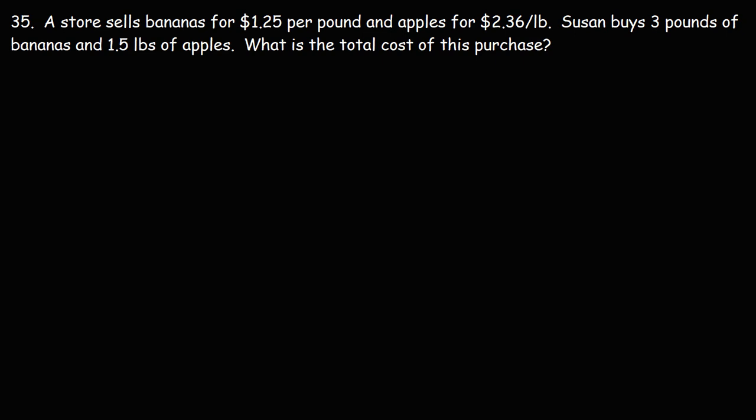Number 35. A store sells bananas for $1.25 per pound and apples for $2.36 per pound. Susan buys 3 pounds of bananas and 1.5 pounds of apples. What is the total cost of this purchase?